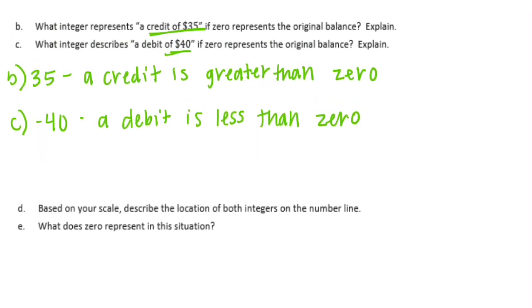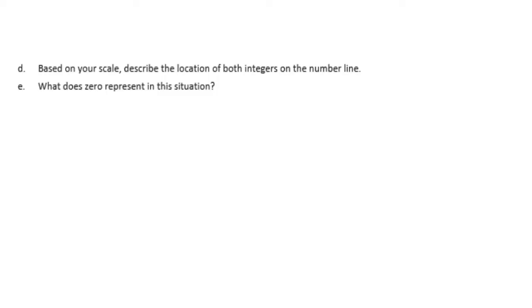D, based on your scale, describe the location of both integers on the number line. We were counting by 5s, so 35 would be... 5 times 7 is 35, so it would be 7 units to the right of 0.